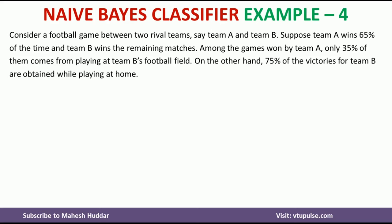In this case, we have been given the statistics of a football game. Consider a football game between two rival teams, say team A and team B. Suppose team A wins 65% of the time and team B wins the remaining matches. Among the games won by team A, only 35% of them come from playing at team B's football field. On the other hand, 75% of the victories for team B are obtained while playing at home.